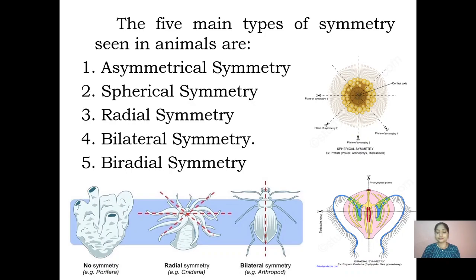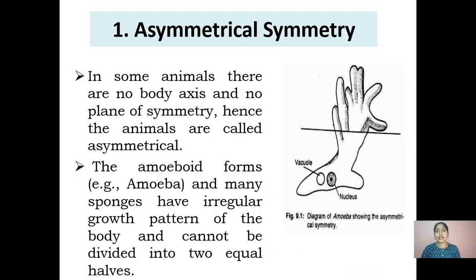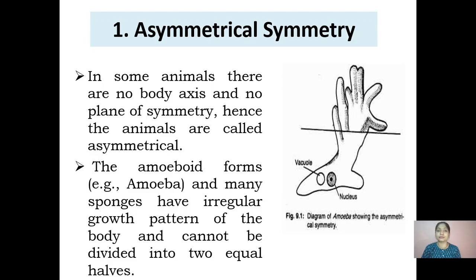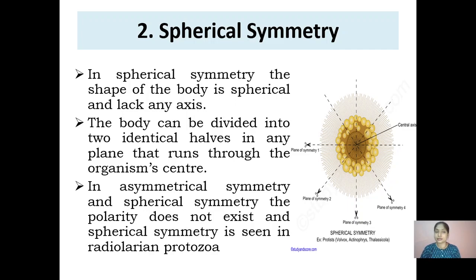In asymmetrical symmetry, some animals have no body axis and no plane of symmetry, and are therefore called asymmetrical. Amoeboid forms such as amoeba and many sponges with irregular growth patterns cannot be divided into two equal halves. As seen in the diagram, amoeba does not have any definite shape and its shape keeps fluctuating — no matter which plane we cut across, we still don't get equal halves. Sponges also cannot achieve symmetry due to their irregular growth pattern.